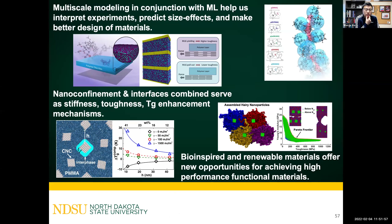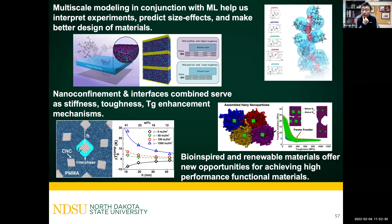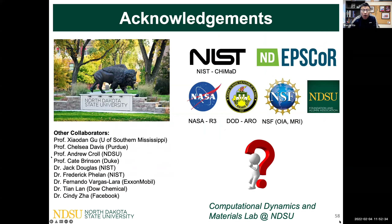Finally, some take-home messages: multiscale modeling in conjunction with experiment and machine learning can help interpret complex phenomena and experimental observations, make predictions of size effects, and enable better material design. Nanoconfinement and interface combined can serve as stiffness, toughness, and Tg enhancement mechanisms. Bio-inspired and renewable materials such as cellulose offer new opportunities for high-performance functional structural materials. I'd like to thank my collaborators and funding agencies: NSF, CHIMAD, NASA, DOD Army Research Office, and NDSU. Thank you — feel free to ask questions.